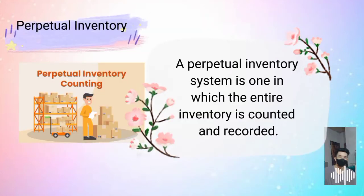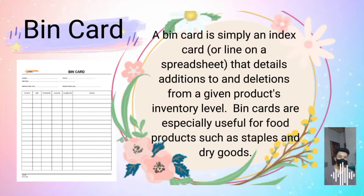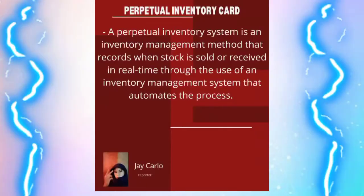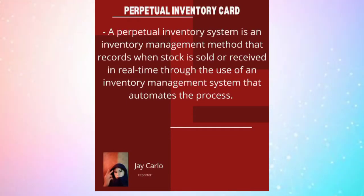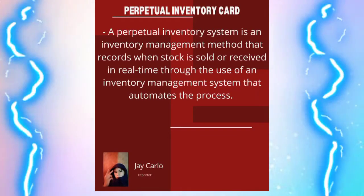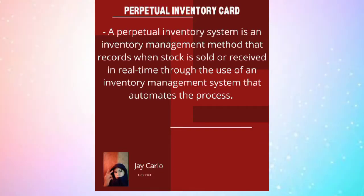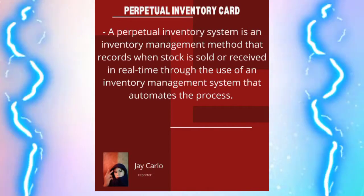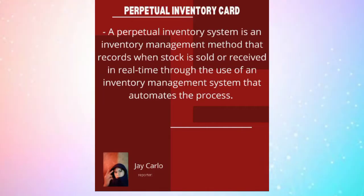A perpetual inventory system is one in which the entire inventory is counted and recorded. A bin card is simply an index card or line in a spreadsheet that details additions and deductions from a given product's inventory level. Bin cards are especially useful for food products such as staples and dry goods. A perpetual inventory system records when stock is sold or received in real time through the use of an inventory management system that automates the process.